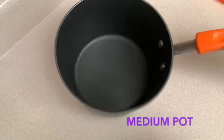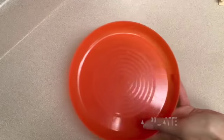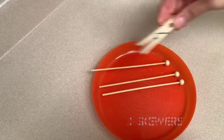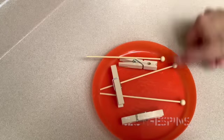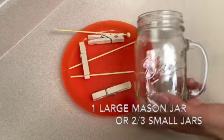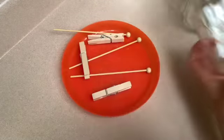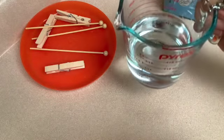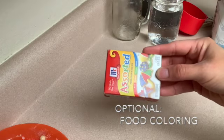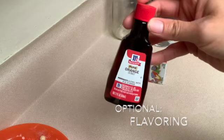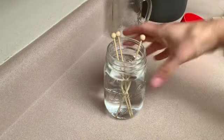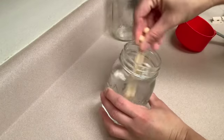Here we go. The first step is to take the three skewers and get them soaked in the water. You're going to need them nice and wet so that the sugar crystals will start to stick.